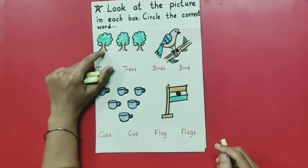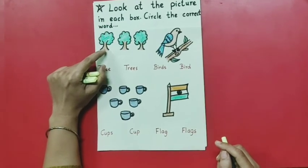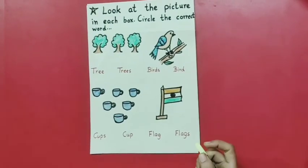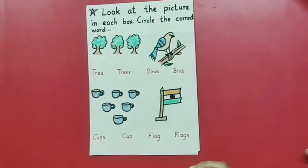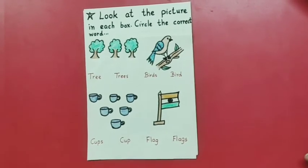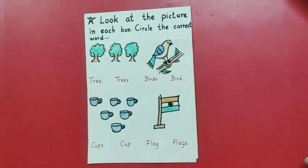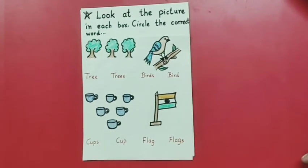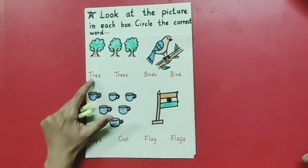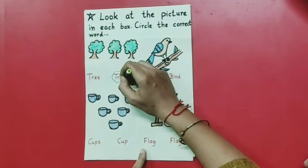Now look here. Which picture is this? Tree. You have to count how many trees are here. If it is more than one, then it will be counted as many. And you have to circle the word in which the spelling is written with 'S' added. You can see here many trees — 1, 2, 3. How many? 3 means more than one, so it is many. So it will be 'trees'. You know the spelling of tree: T-R-E-E. But it's many, so we will circle 'trees'.